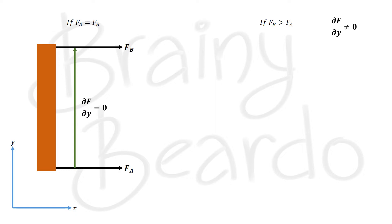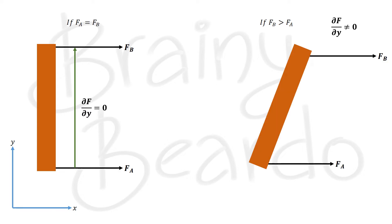In this case, the end pulled by B will move ahead compared to end A, which means the object is rotated by a small angle. So we can conclude that if an object is moving in one direction, say the x-direction, and if a gradient with respect to the opposite direction is not equal to zero, then rotation exists.